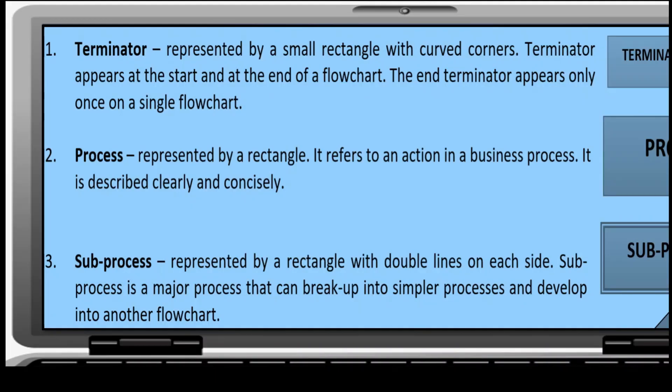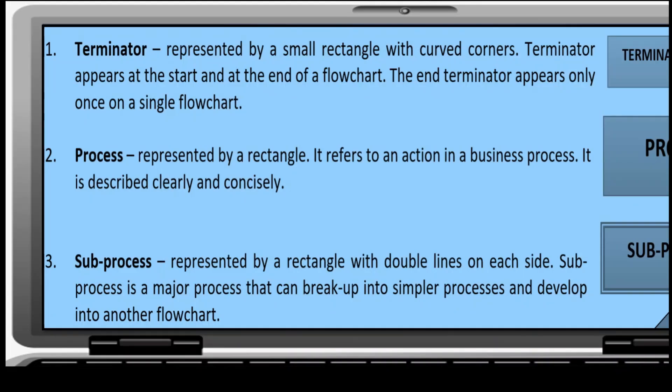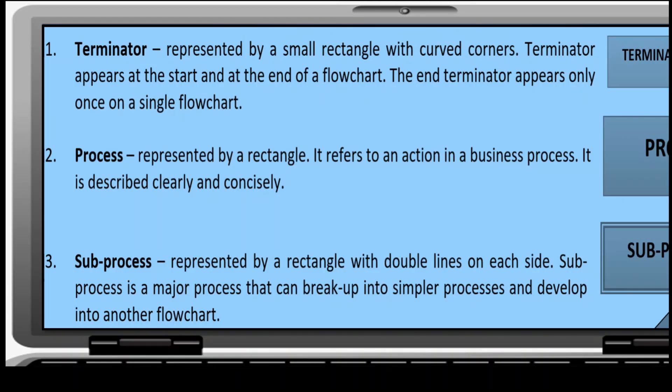Process. It is represented by a rectangle. It refers to the action in the business process. It is described clearly and concisely. Subprocess: Represented with double lines on each side. Subprocess is a major process that can break up into simpler processes and developed into another flowchart.